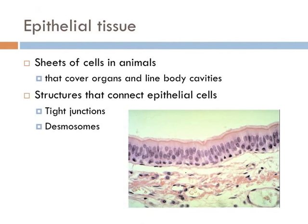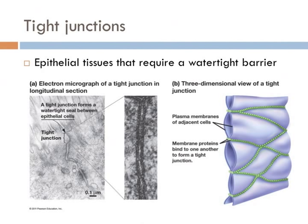Tight junctions are composed of specialized proteins in the plasma membrane of adjacent animal cells. These proteins line up and bind with each other, stitching the two cells together to form a watertight seal between the two plasma membranes. Tight junctions are usually found between cells and tissues that form a barrier, such as the tissue lining the stomach or the bladder, where you wouldn't want water to go from one place to another.